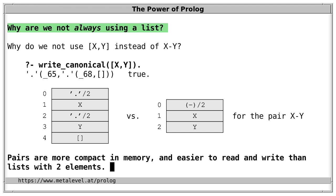There are good reasons for using pairs instead of lists, because pairs are more compact in memory and also easier to read and write than lists with two elements.